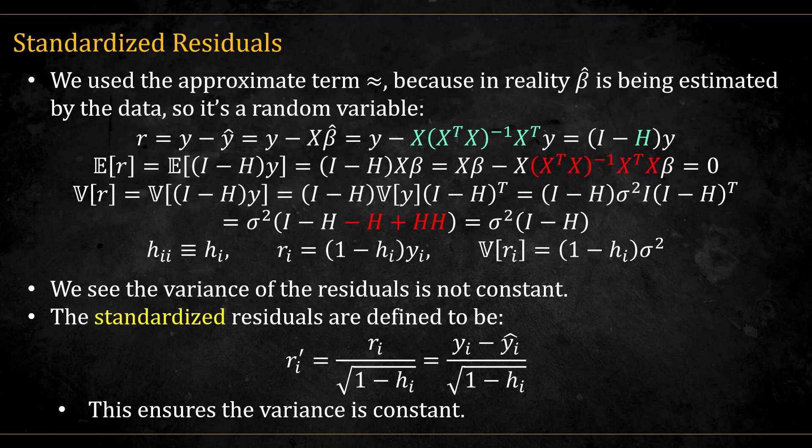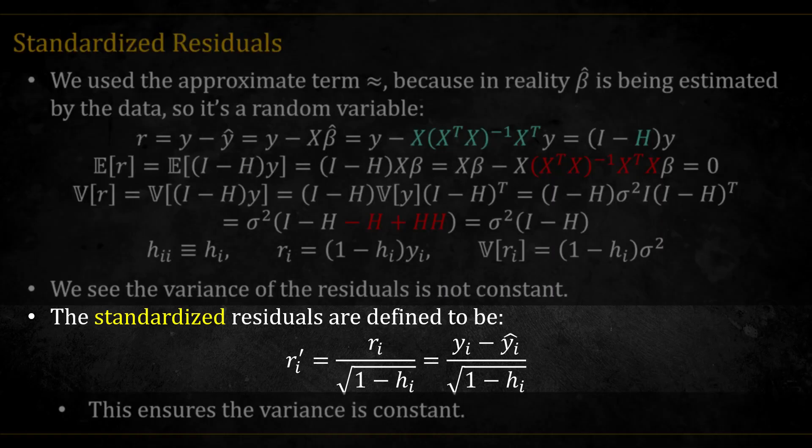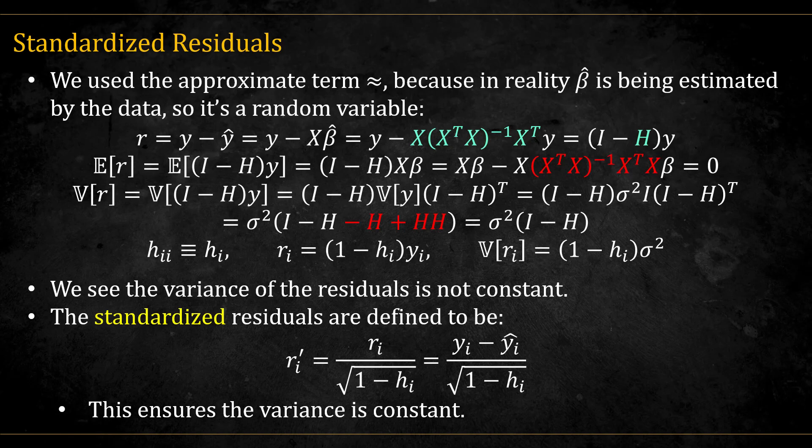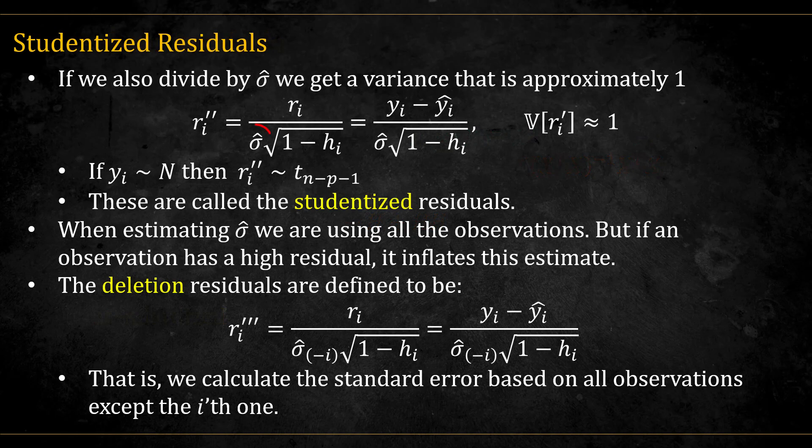If we correct for the different variances, we'll get the standardized residuals, which are defined like this. This ensures that the variance of the residuals is constant. The studentized residuals is when we also divide by the estimate of sigma, and get that the variance is approximately 1.